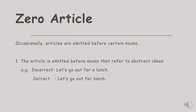After discussing definite and indefinite articles, now we are going to discuss about zero article. Occasionally, articles are omitted before certain nouns. The first case: the article is omitted before nouns that refer to abstract ideas. Ketika kita menunjukkan ide-ide abstract, tidak perlu menggunakan artikel di depannya. For example: 'Let's go out for lunch.' Kata lunch tidak memerlukan artikel — tidak boleh mengucapkan 'Let's go out for a lunch.'